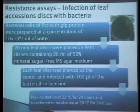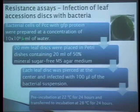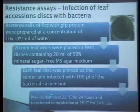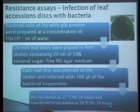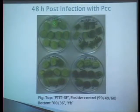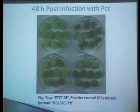Finally, we did the resistance assays on leaf disc accessions. First, bacterial cells expressing GFP protein were prepared. Then, 20 millimeter leaf discs were placed in dishes, each disc was pierced at the center and infected with bacterial suspension. They were pre-incubated at 22 degrees Celsius for 24 hours, then transferred to incubation at 28 degrees Celsius for 24 hours. Here we can see the leaf discs 48 hours post-infection with Pectobacterium carotovorum, and we can see differences ranging from almost completely clean to intermediate levels of infection to complete maceration of the leaf discs.